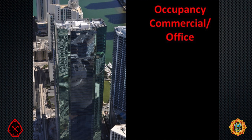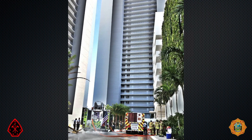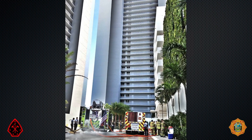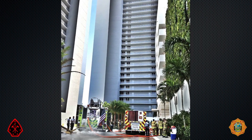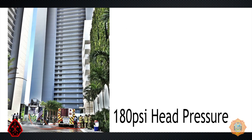Additionally, the height of floors in office buildings as well as new residential buildings are generally 12 feet or higher. As a result, we calculate the head pressure or elevation loss as 6 psi per floor. Now consider a modern 30-story residential or office building. The calculation would be 30 floors times 6 psi per floor, which equals a head pressure of 180 psi at the base of its standpipe risers.